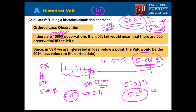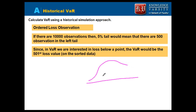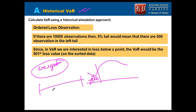One limitation of historical VaR is its dependency on the number of observations. It is a discrete approach because values are tied to discrete data points, whereas real-world distributions are continuous. Another problem is that historical VaR gives equal weightage to all observations. When recent volatility has been high, this equal-weighting approach is not appropriate.